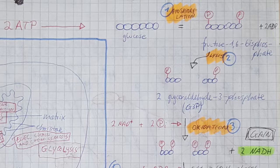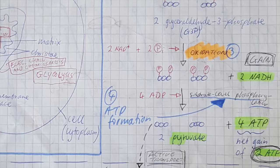This phosphorylation makes the molecule less stable and more reactive, which is good because we want to split it apart. The next step is the actual splitting apart, which is called lysis. By the way, glycolysis literally just means splitting apart sugar. Our third step is then called oxidation — oxidation is the loss of electrons or hydrogen. So we're going to remove hydrogen atoms from these two three-carbon sugars and use them to reduce NAD+, an electron carrier, to NADH. The sugars are oxidized; the electron carrier is reduced.